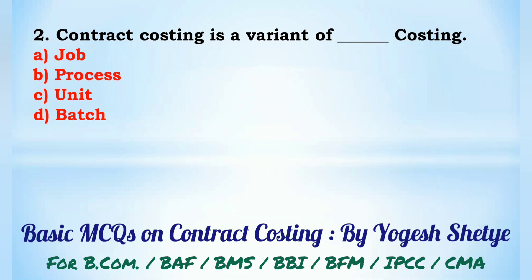Question 2: Contract costing is a variant of — (A) job, (B) process, (C) unit, (D) batch costing. Contract costing is a variant of job costing. Answer: A.